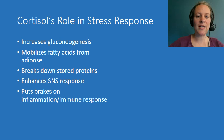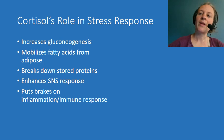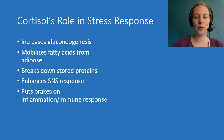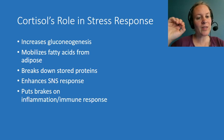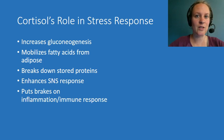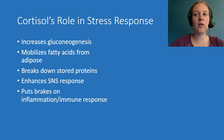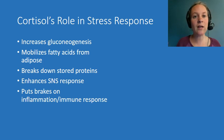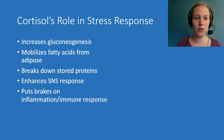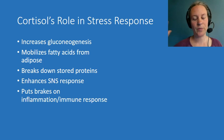Cortisol also puts the brakes on inflammation and the immune response. The sympathetic nervous system starts off inflammation — it releases cytokines and calls in immune cells because damage has likely occurred. Cortisol comes along and essentially says, let's not go overboard here.